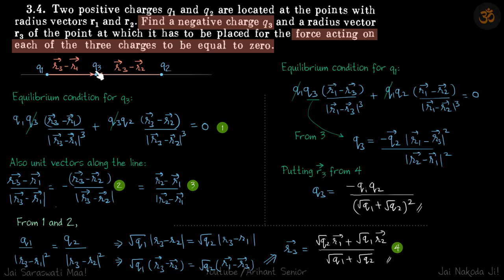Now we have got the equilibrium condition for one of the charges which is q3. Now let's find equilibrium condition for q1. So if two of them are in equilibrium then third will automatically be in equilibrium. So let's just find the equilibrium condition for q1.